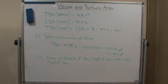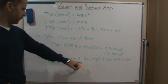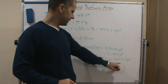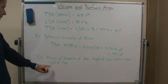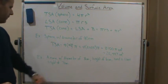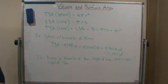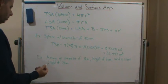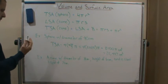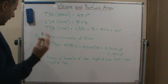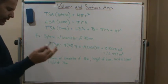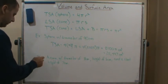The next example is a cone with a diameter of 8 centimeters, a height of 6 centimeters, and a slant height of 7 centimeters. We want both the lateral surface area and the total surface area.